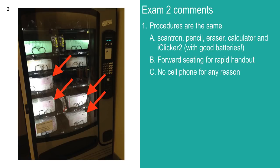If you didn't have a Scantron last time, you can go to the SGA office on the second floor of the Student Union and get one for free, or buy a package from one of the vending machines — there's one on the first floor of Classroom Building 2, and they're around campus.